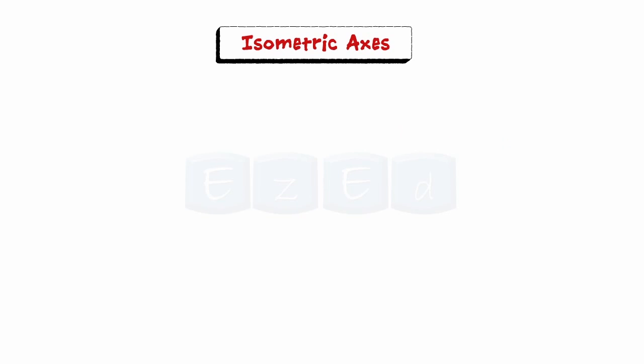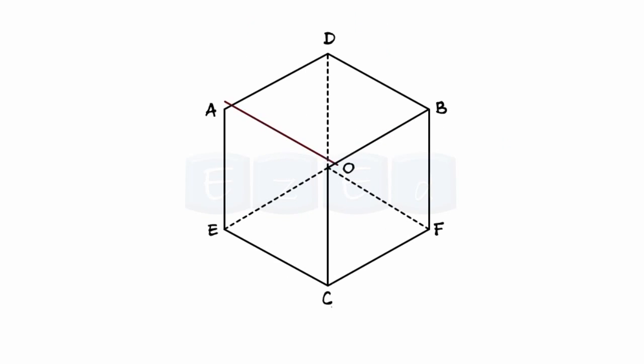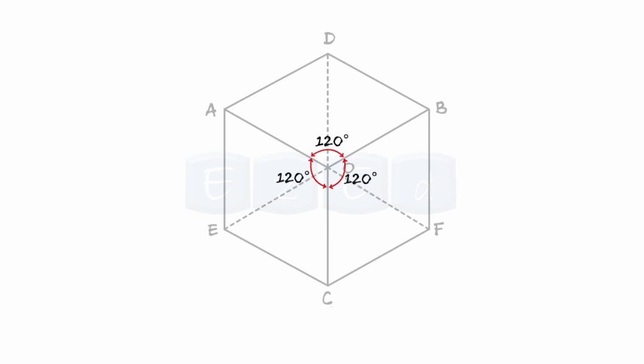Next is isometric axis. The lines OA, OB, OC representing the edges of the cube are equally inclined to each other at 120 degrees and are termed as the isometric axis.